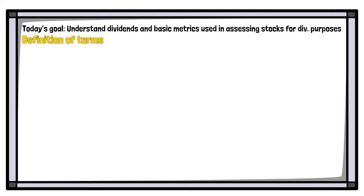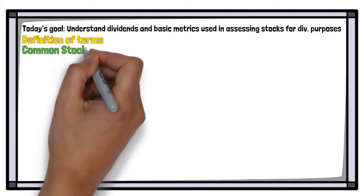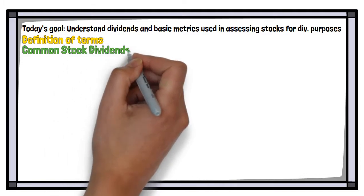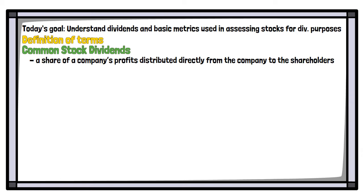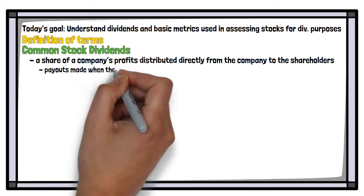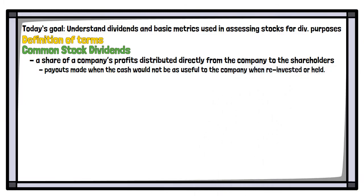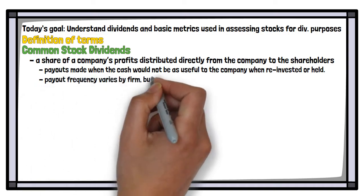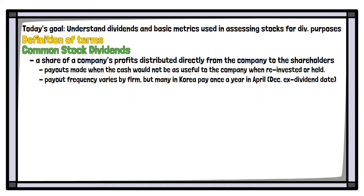Let's start with the keyword dividend. We're going to identify two main dividends, the first one being a common stock dividend. A common stock dividend is a share of a company's profits distributed directly from the company to its shareholders. This is most often done when companies have a surplus of profits that they decide would be of better use to be given back to shareholders directly, rather than to be reinvested into the company. These payments happen on a regular basis, whether it be quarterly, biannually, or, as is the case with many companies in Korea, annually.